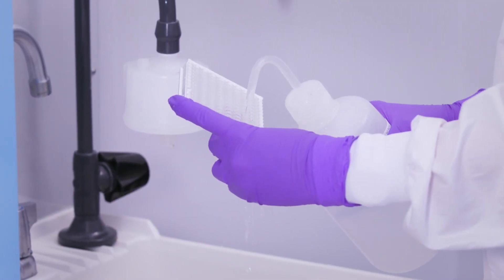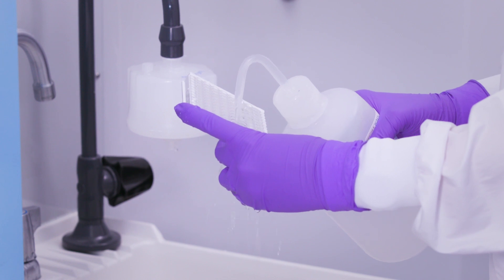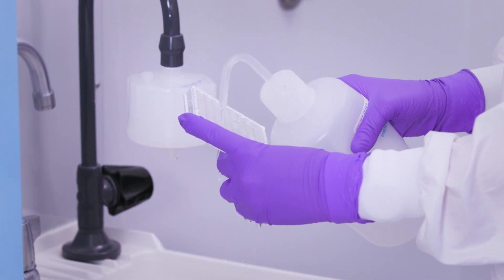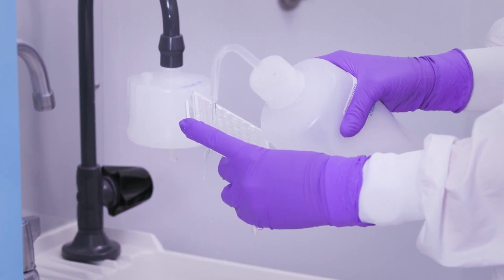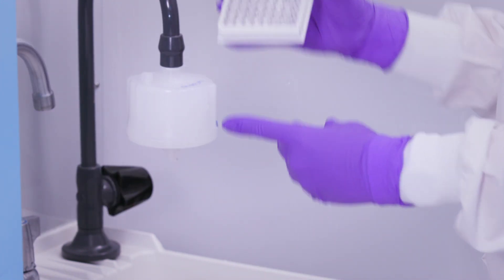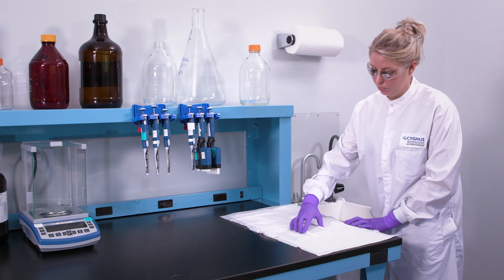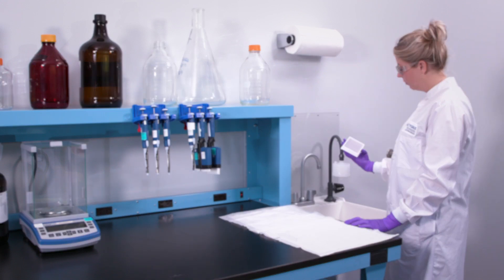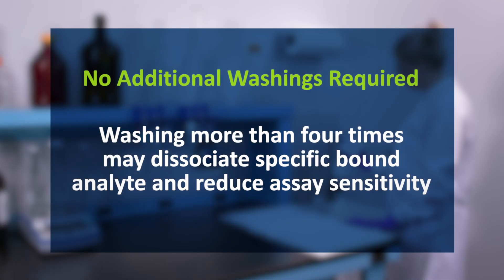With the second and fourth washes, start by adding the wash solution moving from the bottom toward the top of the plate. This ensures that the total dwell time of the wash solution will be essentially the same for all wells. Additional wash steps are not necessary. Doing this may dissociate specific bound analyte and reduce assay sensitivity.